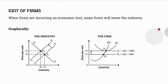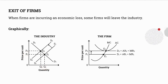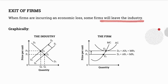Let's look at what happens when firms exit the market. When firms are incurring an economic loss, some firms will leave the industry. Starting again with the original situation where D1 and S1 intersect, the equilibrium point of E1, price of P1, and quantity Q1 is formulated. The firm is a price taker and will adopt the price of P1. At P1, an economic loss is being incurred because the average costs lie above the average revenue. When that happens, some firms will leave the industry, causing the supply curve to decrease from S1 to S2.